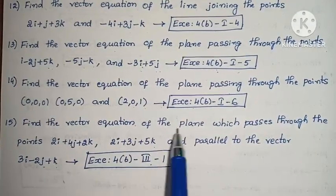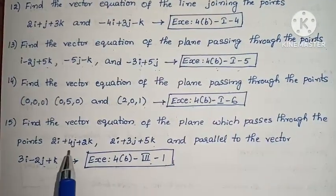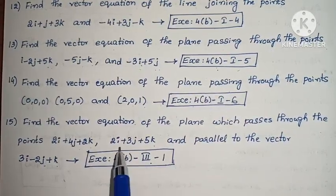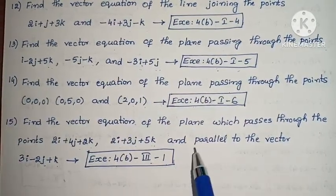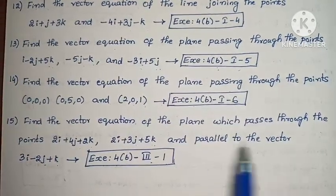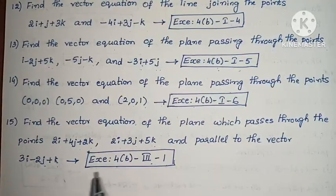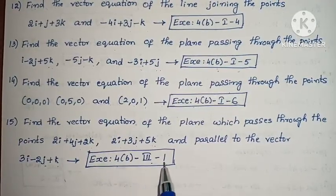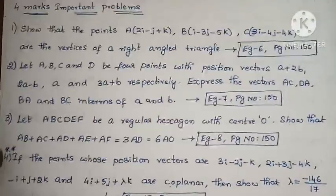Next: Find the vector equation of the plane which passes through the points 2i + 4j + 2k, 2i + 3j + 5k, and is parallel to the vector 3i minus 2j + k. Exercise 4B, third exercise, problem 1. That completes the 2-mark problems.